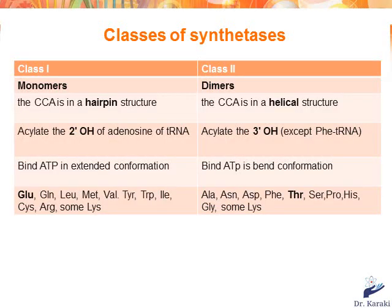We said previously that some amino acids are attached to the 3' end of tRNA and others are attached to the 2'OH. This depends on the class of synthetase. The 20 aminoacyl-tRNA synthetases are divided into two classes: class I and class II. It is class I that acylates the 2'OH of tRNA, while class II acylates the 3'OH. Class I enzymes are mostly monomers while class II are mostly dimers.